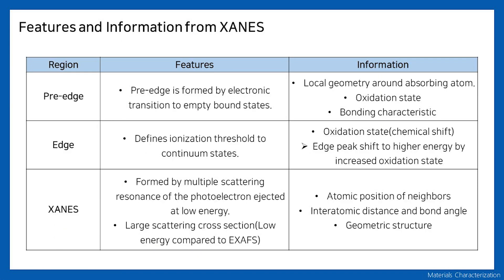From each region of the data, we can acquire different kinds of information. Since the pre-edge peak is formed by electronic transitions to empty bound states, we can acquire information of the local geometry around the absorbing atom, the oxidation state of the atom, and the bonding characteristics. From the edge peak, which comes from the ionization of the atom, we can obtain the oxidation state, and the shift of this peak to higher energy states indicates an increase in oxidation states.